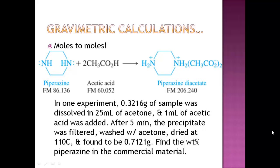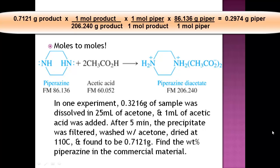The first thing we need to do is find the mass of the piperazine. The experiment gives you the mass of the product, which is 0.7121. So you take 0.7121 grams of product and use the molecular weight of the product to get to moles, which is 206.240 grams per mole. Now you go moles to moles. It's a 1 to 1 ratio, so 1 mole of product goes to 1 mole of piperazine. Now convert that to grams of piperazine using the formula mass, 86.136 grams per mole, which gives you 0.2974 grams of piperazine.